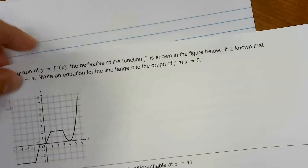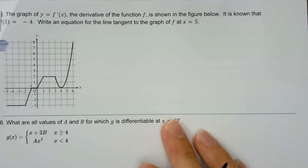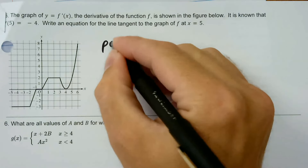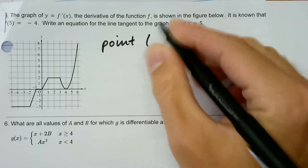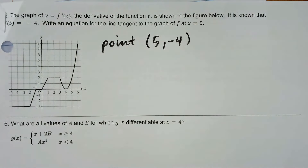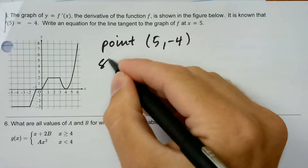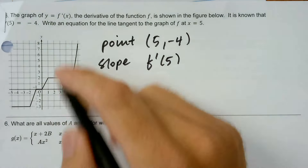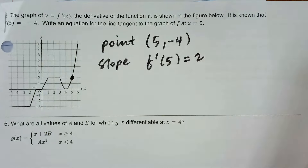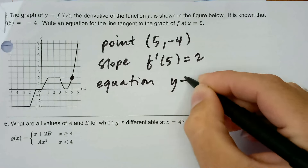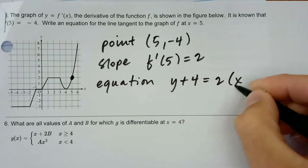The graph of y equals f'(x) is shown in the figure. It is known that f(5) equals negative 4. We need an equation for the line tangent to the graph of f at x equals 5. We need a point: x equals 5, y equals negative 4 — they told me that point was on the graph of f, that's our point of tangency. For the slope, I'm going to need f'(5). Fortunately, this is the graph of f', and I can read f'(5) equals 2. So y minus negative 4 equals 2 times x minus 5.